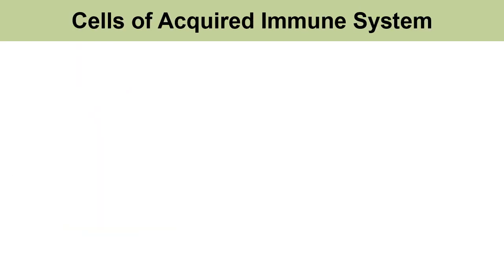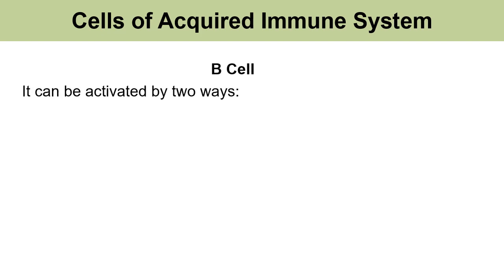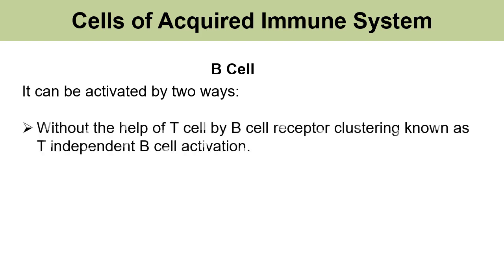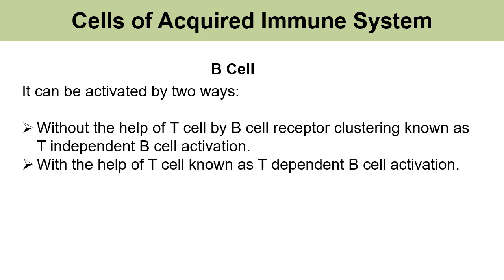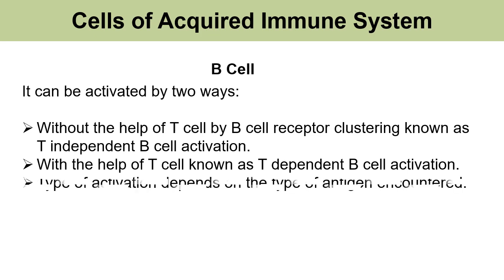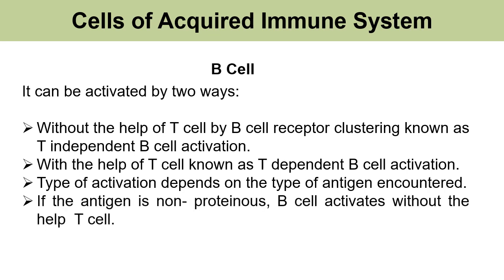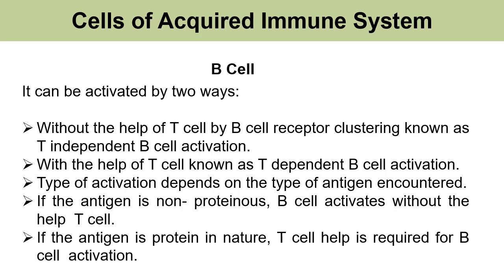The cells of the acquired immune system need to be activated before they can combat infection. The B cell can be activated in two ways. If activated without the help of the T cell, it is known as T-independent B cell activation. If it requires T cell help, it is known as T-dependent B cell activation. The type of activation depends on the antigen encountered: if the antigen is non-proteinous, the B cell activates without T cell help; if the antigen is protein in nature, T cell help is required.